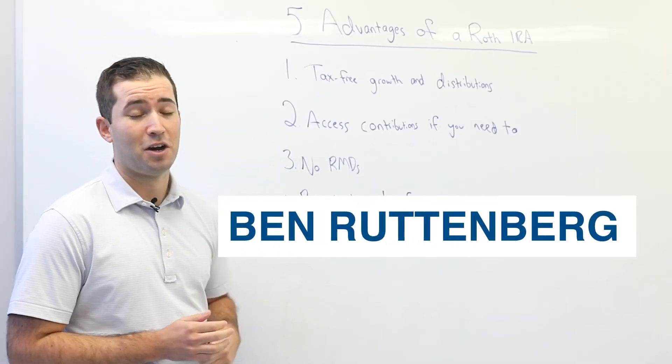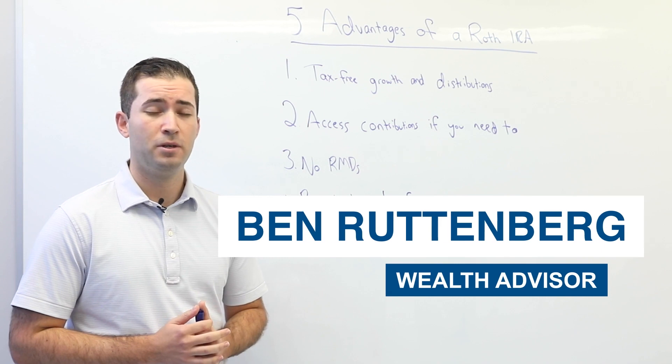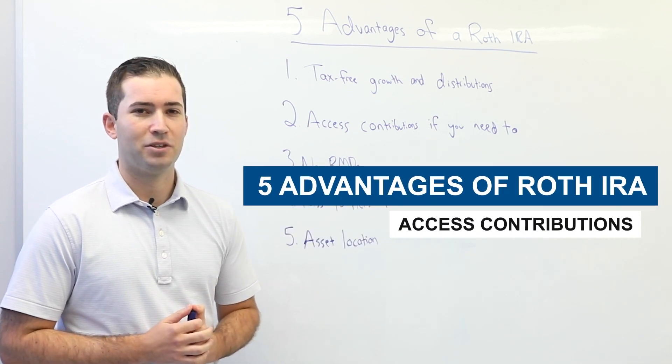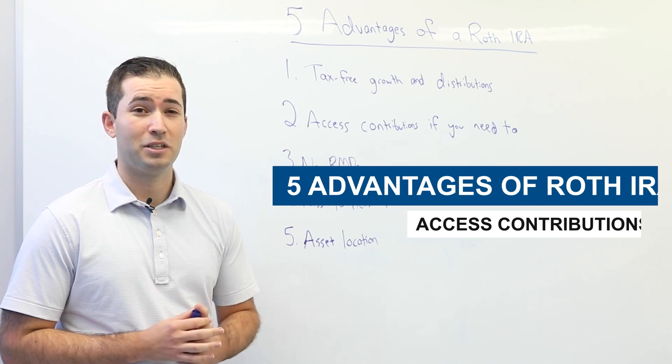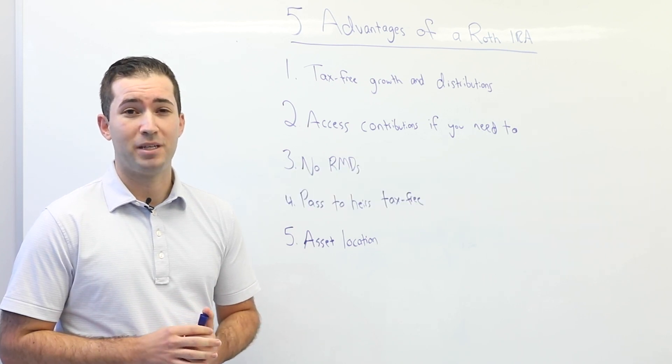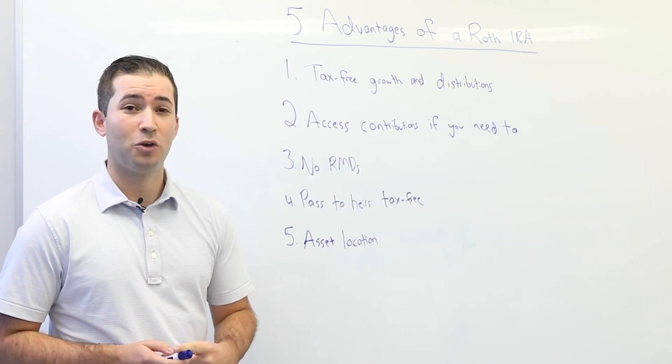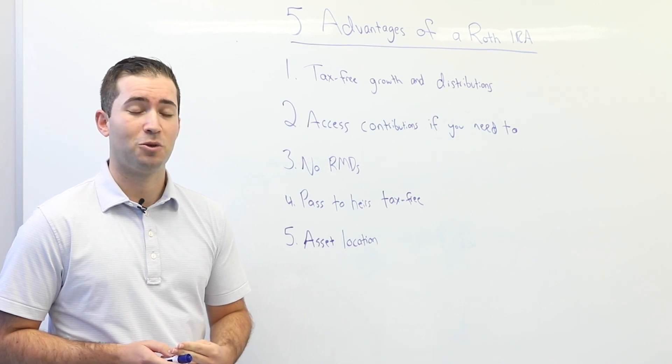The second advantage is that you can access contributions if you need to. Typically, if you wanted to take money out of a traditional IRA or a 401k and you wanted to take an early distribution, you would be subject to a 10% early withdrawal penalty and also subject to ordinary income tax.